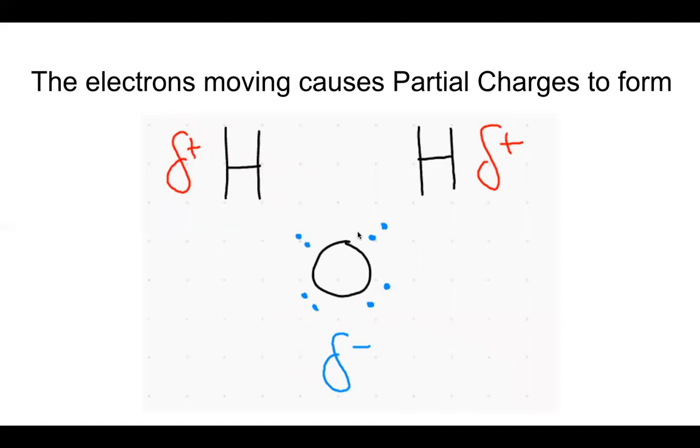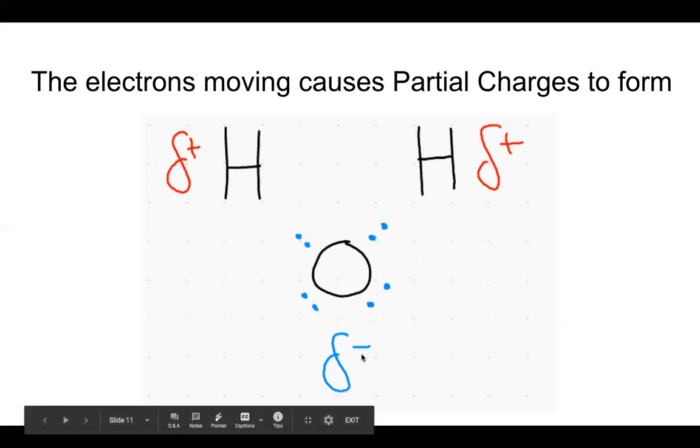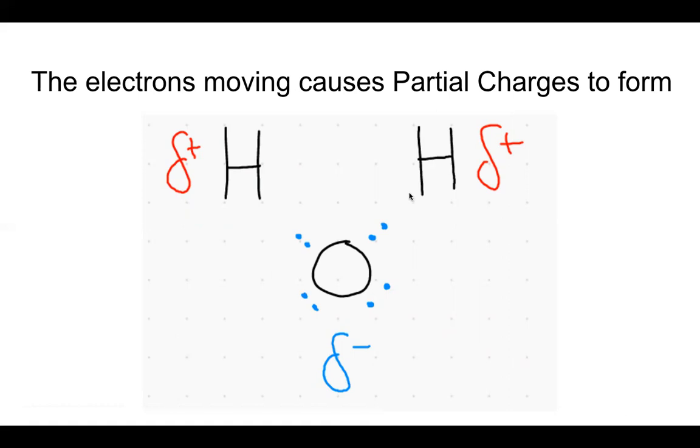The electrons moving causes partial charges to form. Why? Electrons are negatively charged. So if the oxygen gets the negative charge closer to it, it forms a partial negative charge. Partial means it's not fully negative. And because the negativeness left the hydrogen, it became partially positively charged.